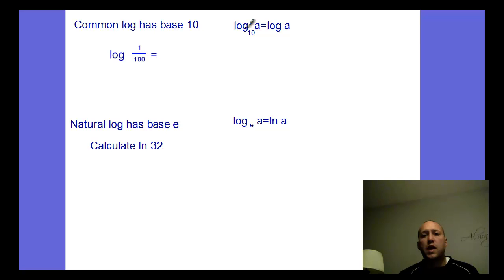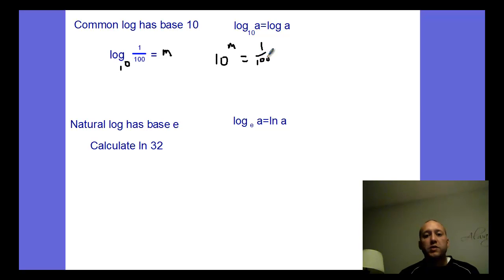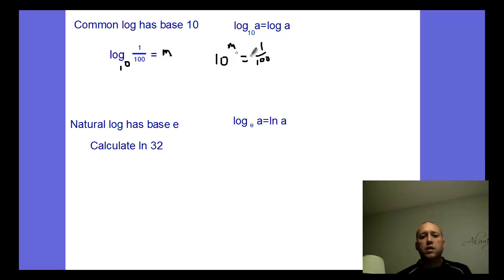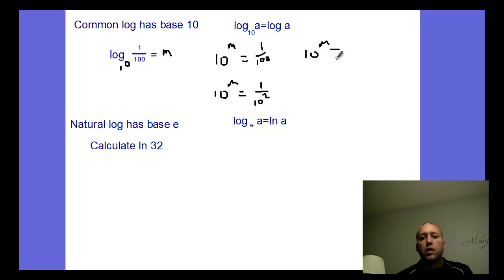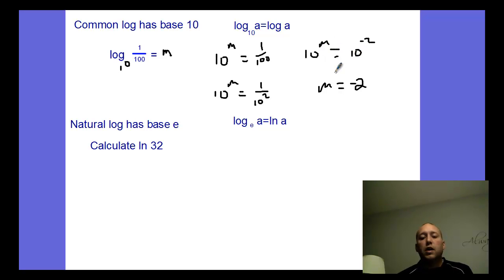The common log has base ten. Log base ten of a is just written as log a — you don't have to show the base. So log of one one-hundredth is the same as putting a ten in: ten to the m equals one over one-hundredth. Using exponent rules, one over one-hundredth is one over ten squared, which equals ten to the negative two. So ten to the m equals ten to the negative two, meaning m equals negative two. That's using our one-to-one exponent property: if the base is the same, the exponents have to be the same. We can evaluate that without a calculator, just using mental math exponent rules.